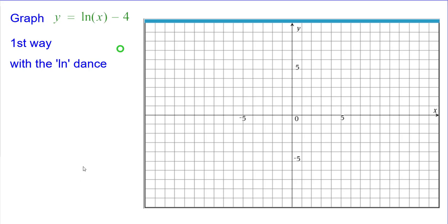We're going to graph y equals the natural log of x minus 4 with the natural log dance. We know that y equals the natural log of x has an asymptote at x equals 0, so we'll go ahead and plot that.